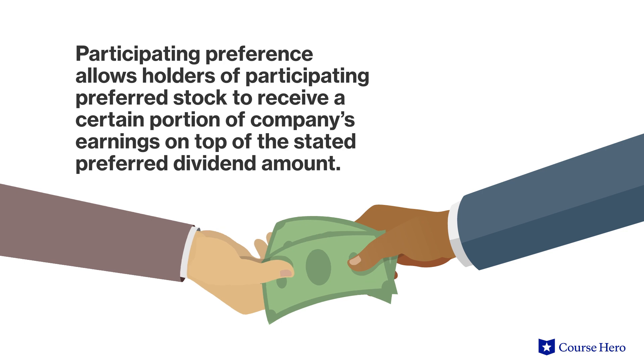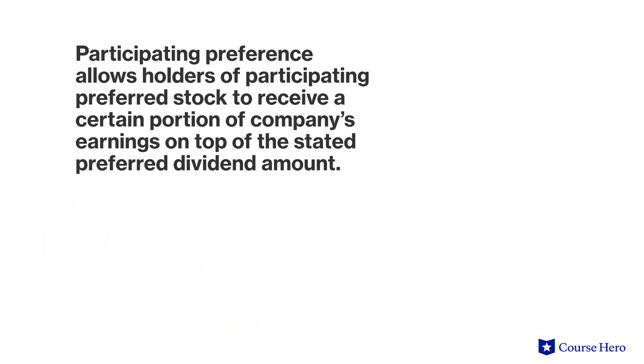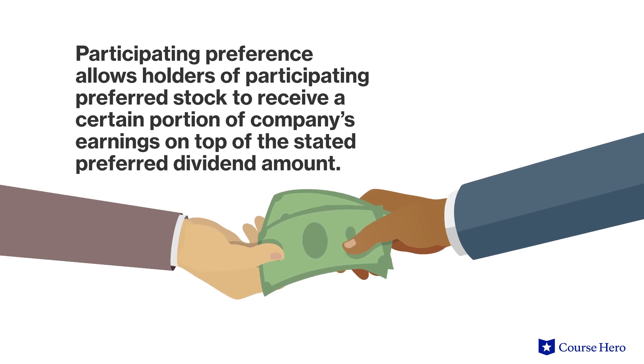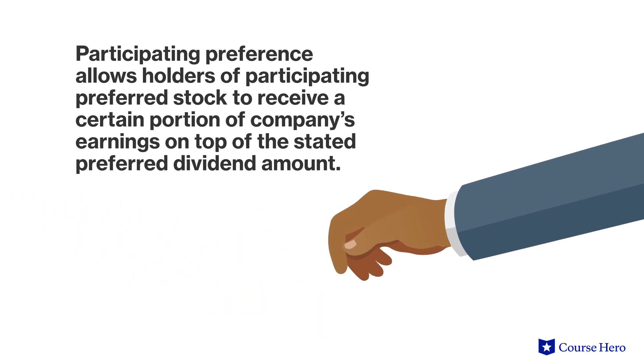Suppose the company experienced losses for four years and therefore preferred stockholders did not receive their promised dividends. In year five, when the company is back to being profitable, holders of cumulative preferred stock are entitled to five years' worth of stated dividends before common shareholders can receive any dividend. Third, the participating preference: this allows holders of participating preferred stock to receive a certain portion of the company's earnings on top of the stated preferred dividend amount.